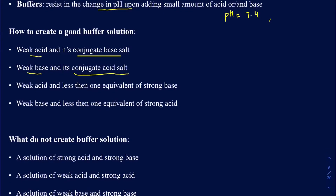There is also a common misunderstanding that if you have a strong acid or a strong base, you're not going to be able to create a buffer. But that really depends on what else you have. If I have a weak acid, I can still create a buffer system even after adding a strong base, as long as I don't add one equivalent of that strong base. If I'm staying below one equivalent of the strong base, that weak acid can still produce a buffer system.